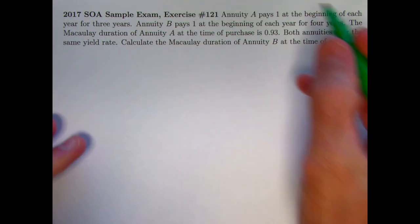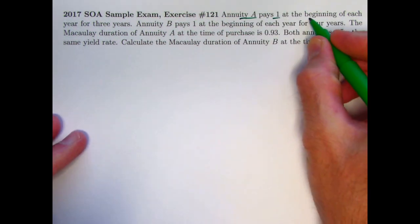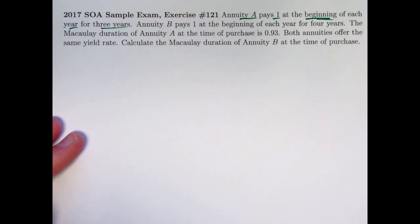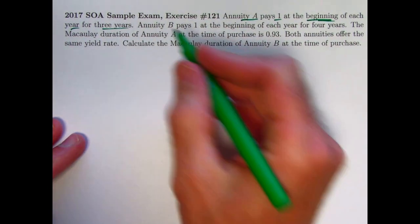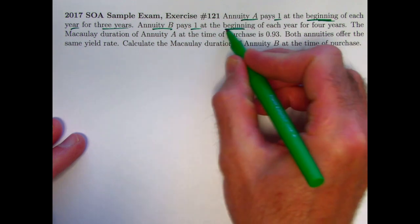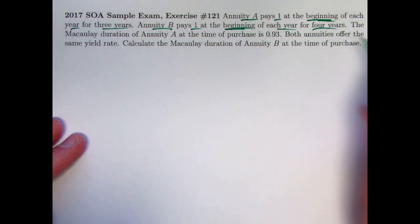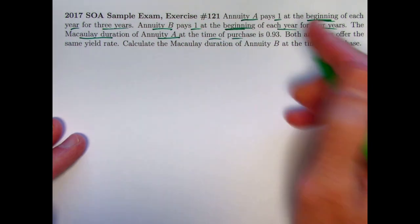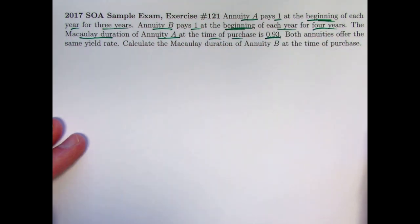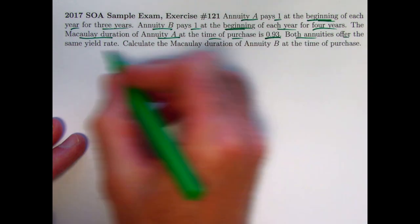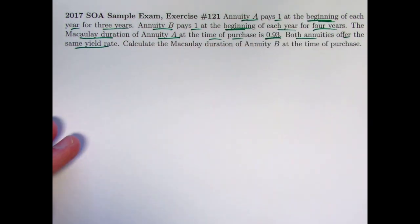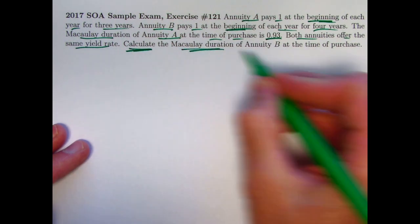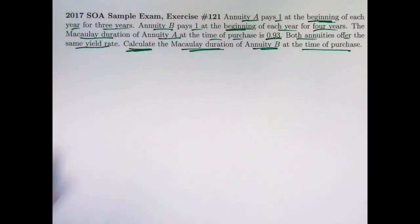So here's the situation. Two annuities. Annuity A pays one at the beginning of each year for three years. So that's an annuity due with three payments. Annuity B pays one at the beginning also of each year for four years. The Macaulay duration of annuity A at the time of purchase, time zero, is 0.93. Both annuities offer the same yield rate. The goal is to calculate the Macaulay duration of annuity B at the time of purchase at time zero.